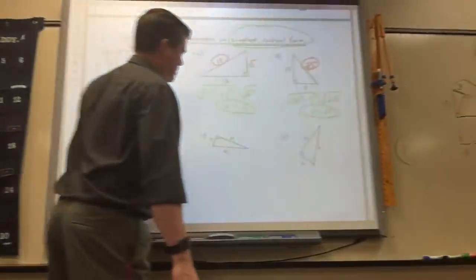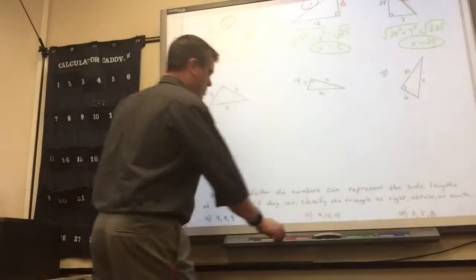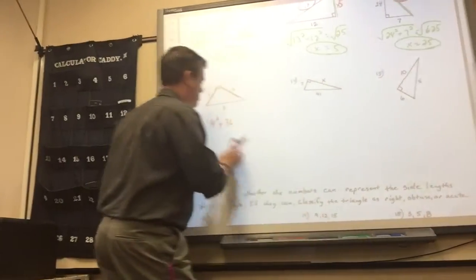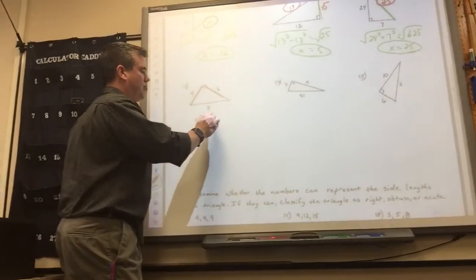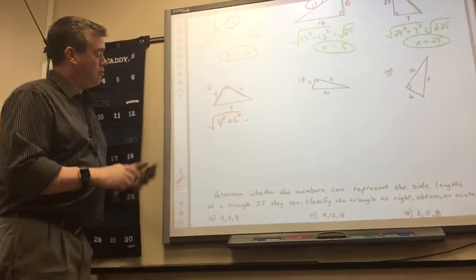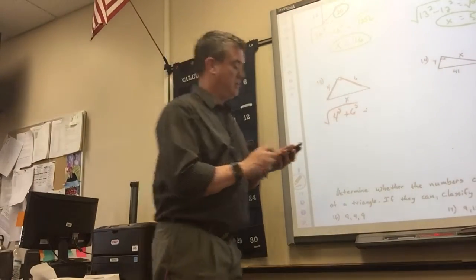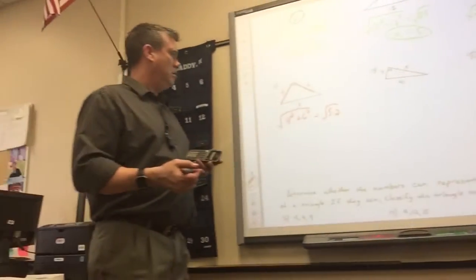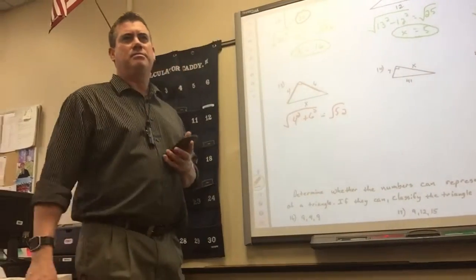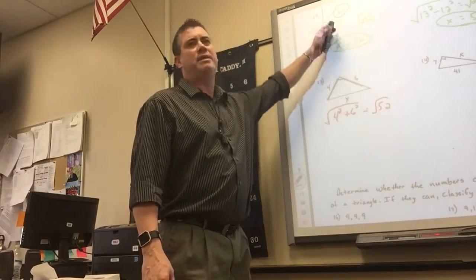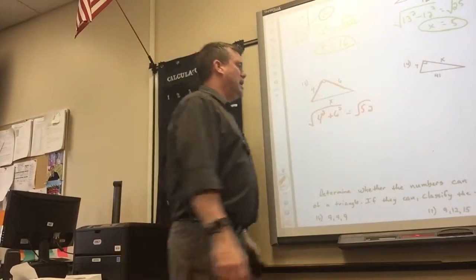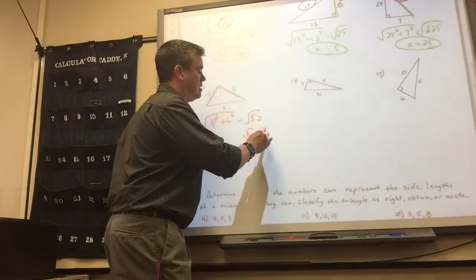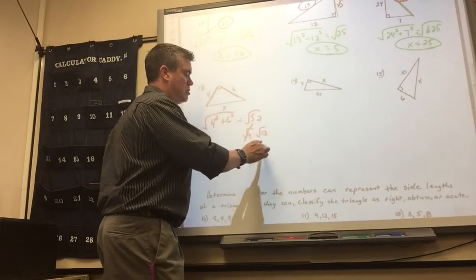These next three are not perfect squares. Number 13 — it's two legs, so you square and add them. 4 squared is 16 plus 6 squared is 36 — so the square root of 52. To write it in simplest form, what perfect square goes into 52? 4 times 13. So the 4 reduces to 2 — giving you 2 square roots of 13.